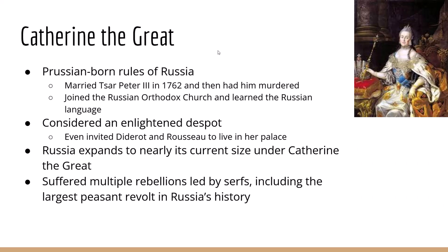When Peter the Great died, the succession did not go well. Peter had killed his only son, leading to about 30 years of fighting and civil war. Many of the changes Peter had made were forgotten. By the 1740s, Russia had a backward economy, a very strong government, and the aristocracy and peasants were completely under control.